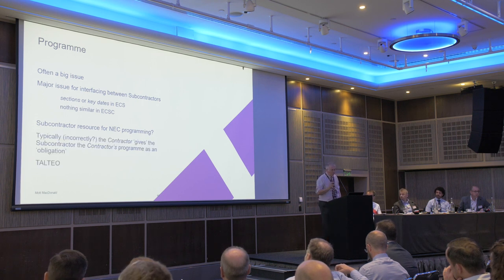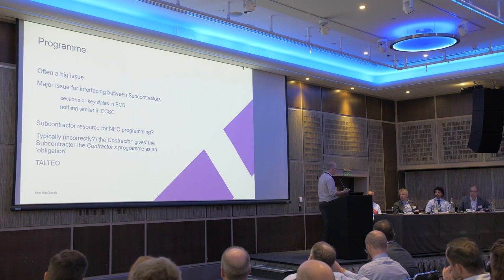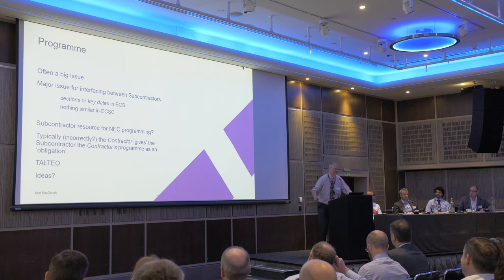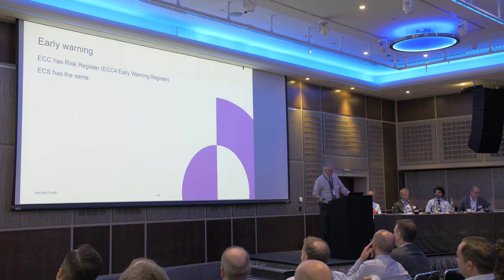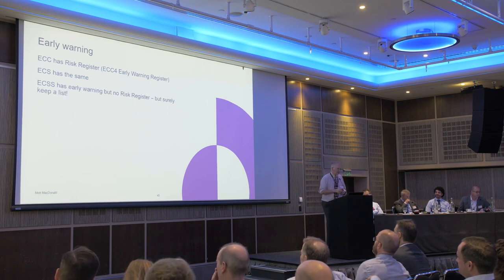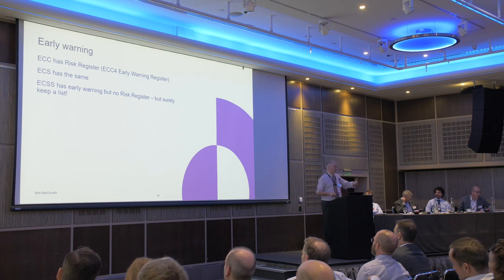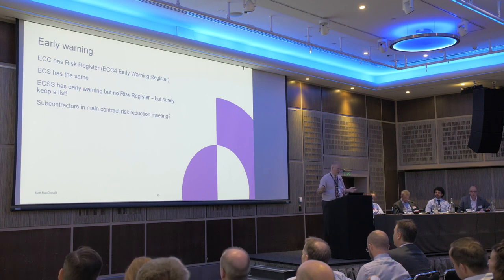All I can say in terms of top tips — the answer is TALTIO: talk and listen to each other, between contractor and subcontractor. ECC has a risk register, the ECS has the same — two separate risk registers going on. The short contract hasn't got a risk register, but we should certainly keep a list of early warnings. Do we get subcontractors into the main contract risk reduction meeting?